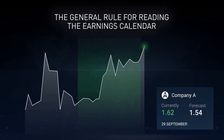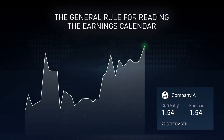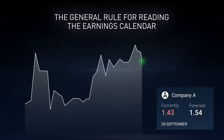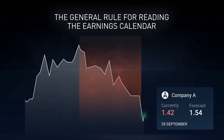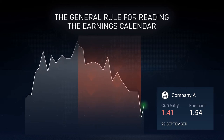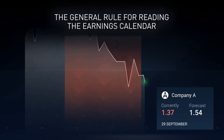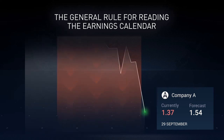If the EPS is better than the estimate, the stock price will move higher. If the EPS meets the estimate, the stock price will most likely not move. If the EPS is lower than the estimate, the stock price will fall. The previous values are usually less important than the forecast. The market reaction will be stronger if the difference between the forecast and the actual earnings is large.